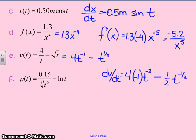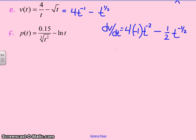Rewriting this, I get negative 4 divided by t squared minus 1 divided by 2 times the square root of t.